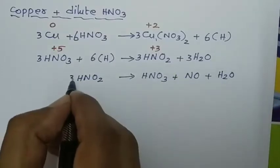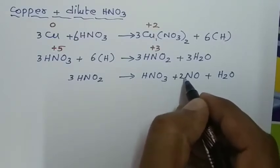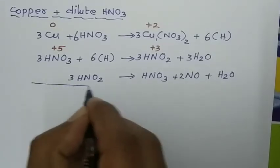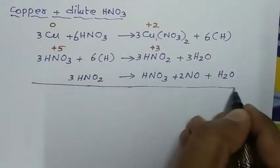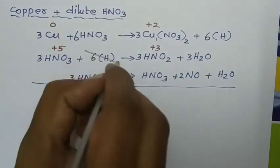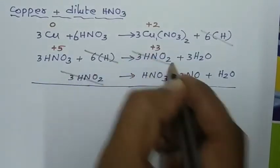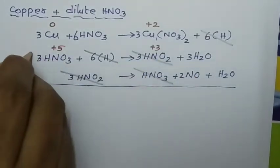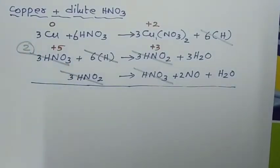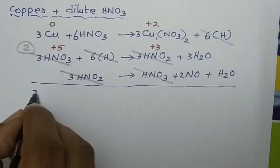3 molecules of nitrous acid decompose, giving HNO₃ plus NO plus H₂O, yielding 2 and 1 — 3 nitrogen — and the equation is balanced. When we add all three reactions and cancel equal molecules: 6 nascent hydrogen and 6 hydrogen cancel, 3 HNO₂ and 3 HNO₂ cancel, and 1 HNO₃ cancels. Remaining we have 2 HNO₃.